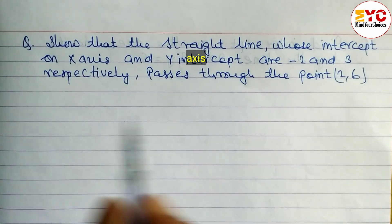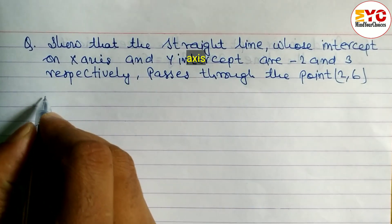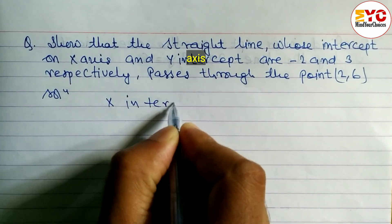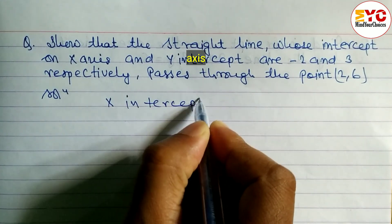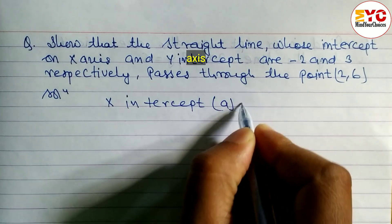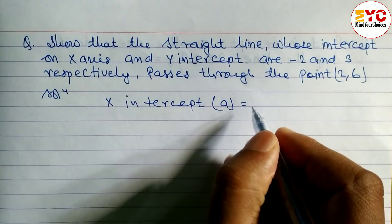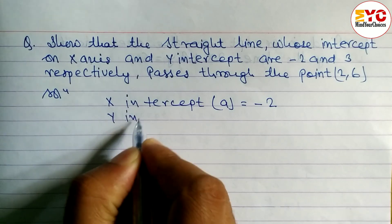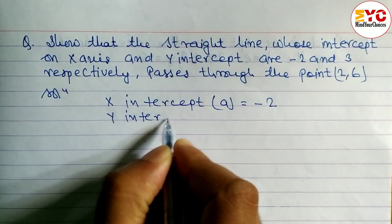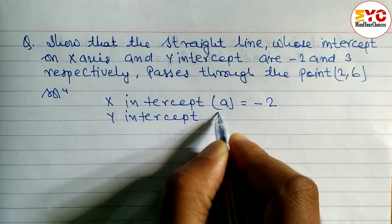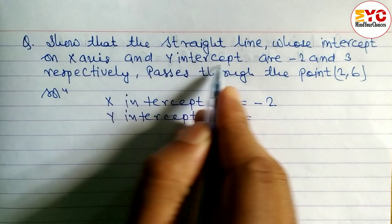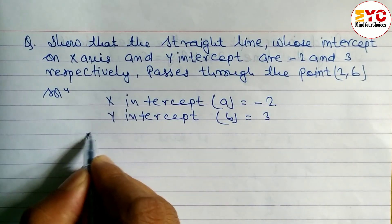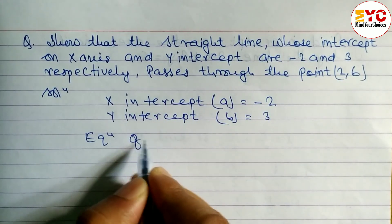First of all we have to find out the equation of a straight line. The x-intercept is known as 'a', so a is equal to minus 2. Similarly, the y-intercept b is equal to 3.